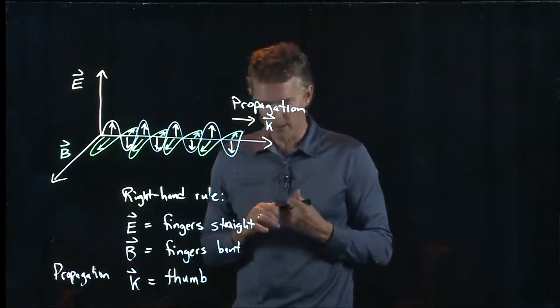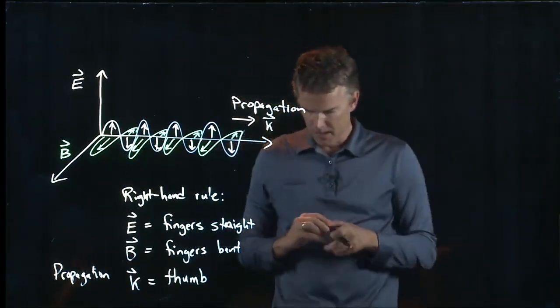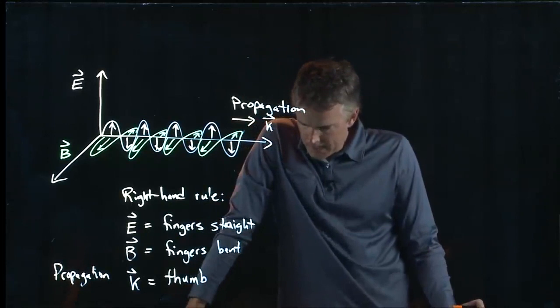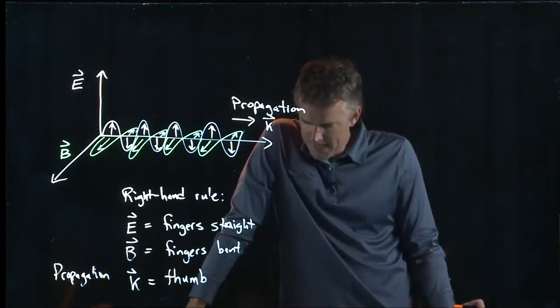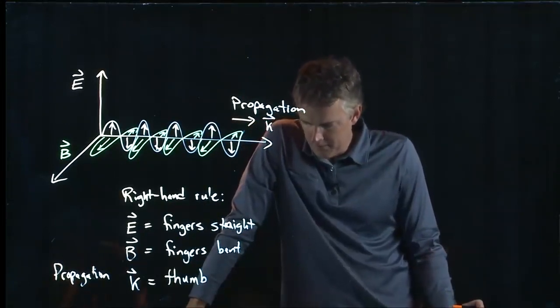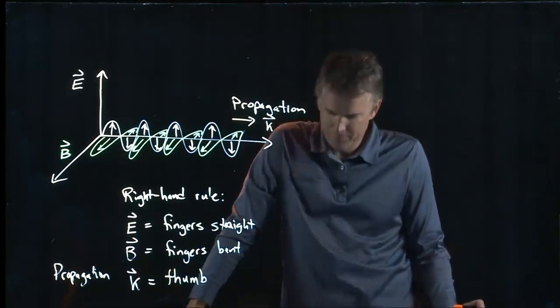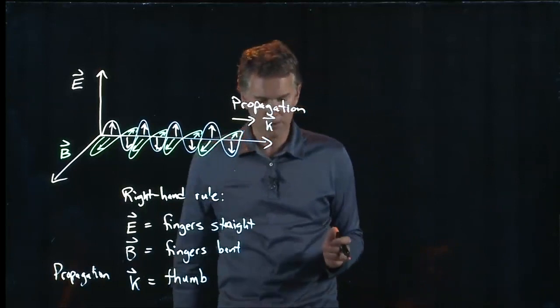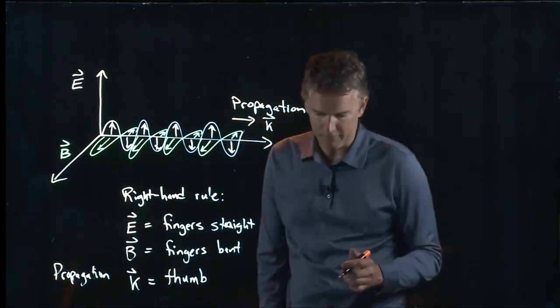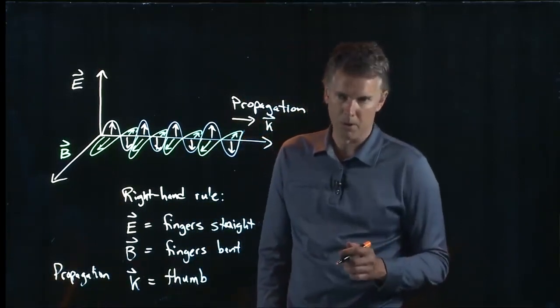So let's go back to the question that they had for a second. They said that an electromagnetic wave is traveling straight down towards the center of the earth. At a certain moment in time, the electric field points west. In which direction does the magnetic field point at this moment?